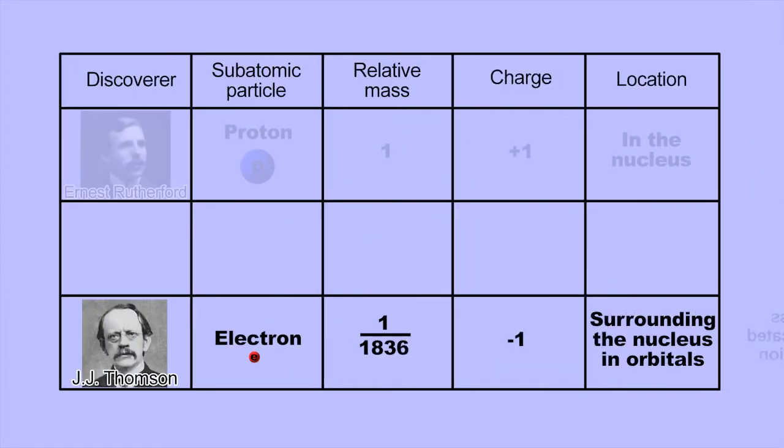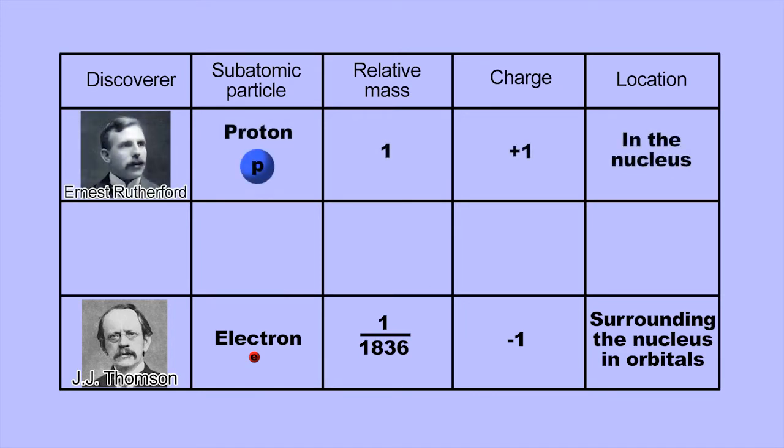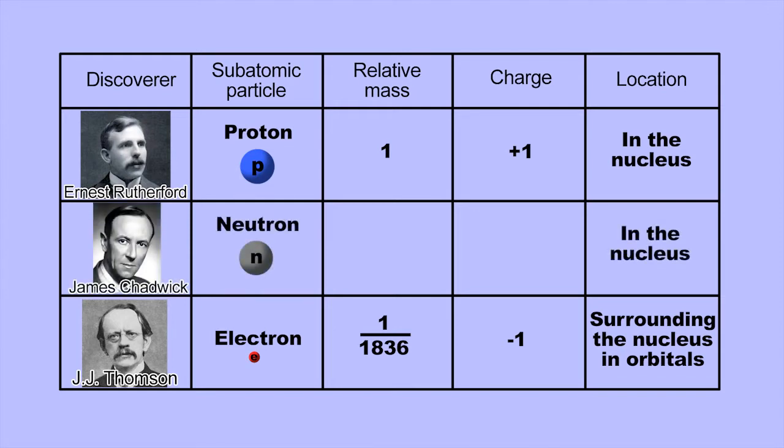Rutherford had already discovered that the nucleus contains positively charged particles he called protons. In 1932, James Chadwick discovered the nucleus also contains particles he called neutrons. A neutron has about the same mass as a proton but is electrically neutral, so can add extra mass to the atom without adding any extra charge.